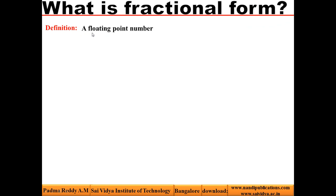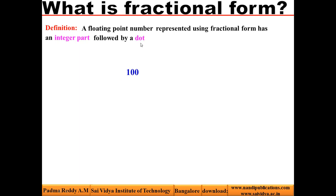Let us look into the definition of fractional form. A floating point number represented using fractional form has an integer part, such as 100, and this integer part must be followed by a dot, which in turn must be followed by a fractional part. So a floating point number represented using fractional form has an integer part and a fractional part, separated by a dot symbol.